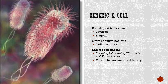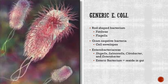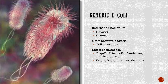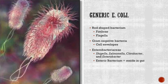Generic E. coli is a rod-shaped bacterium. Here in the picture, we see that the bacteria is covered in fimbriae, which are the hair-like structures that aid the bacteria in latching onto its surface. The bacteria also possess several flagella, which aid the bacteria in movement through its environment.